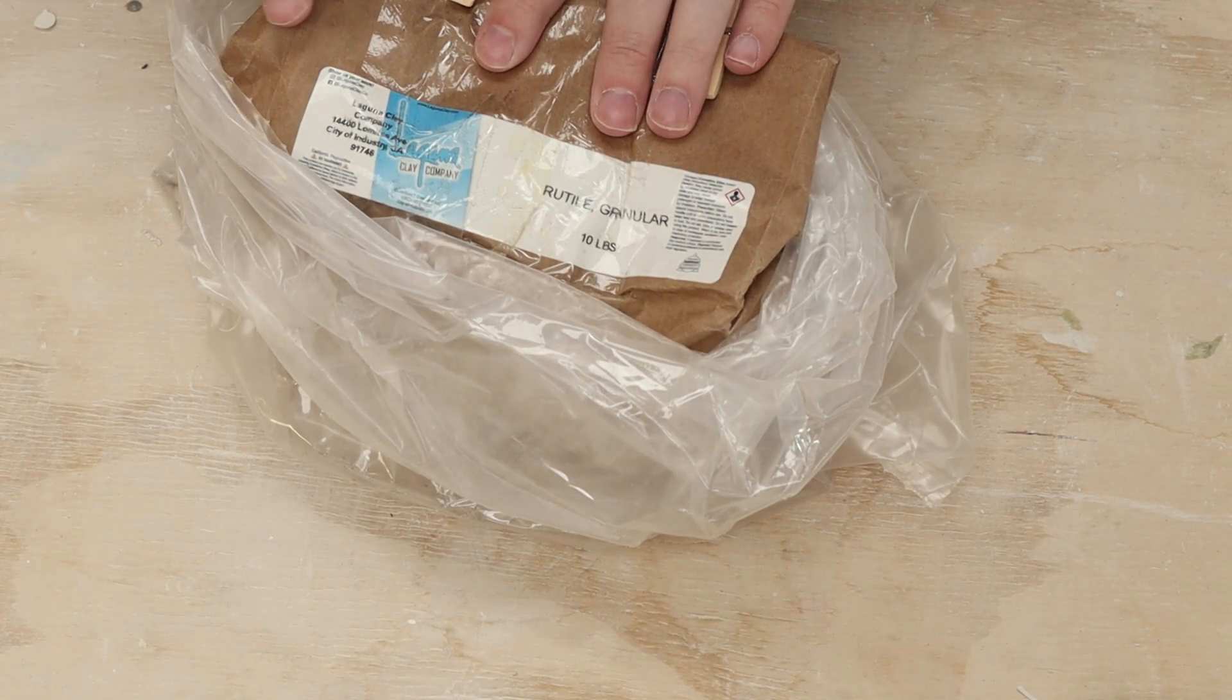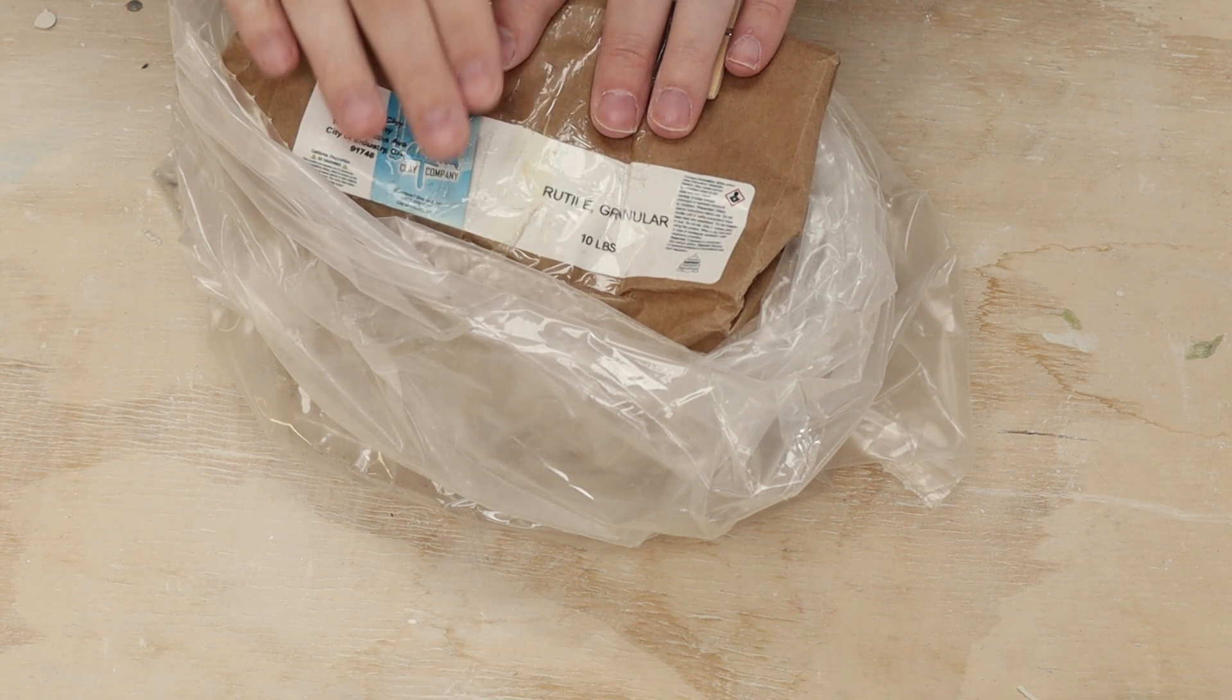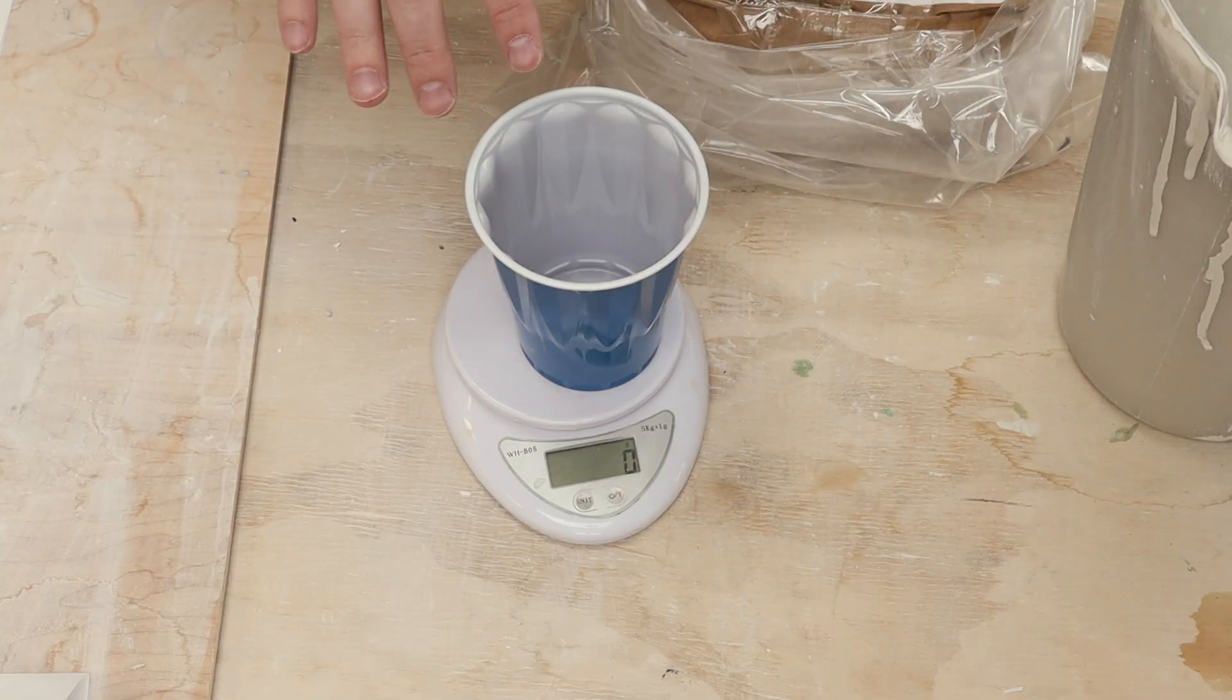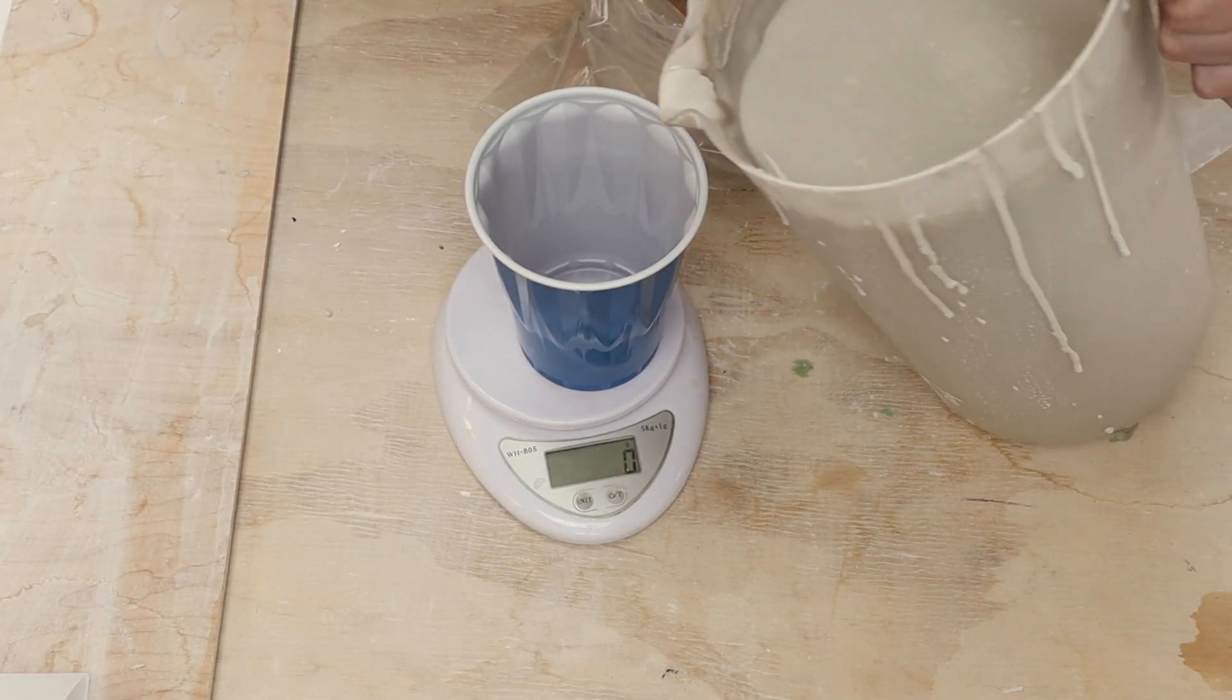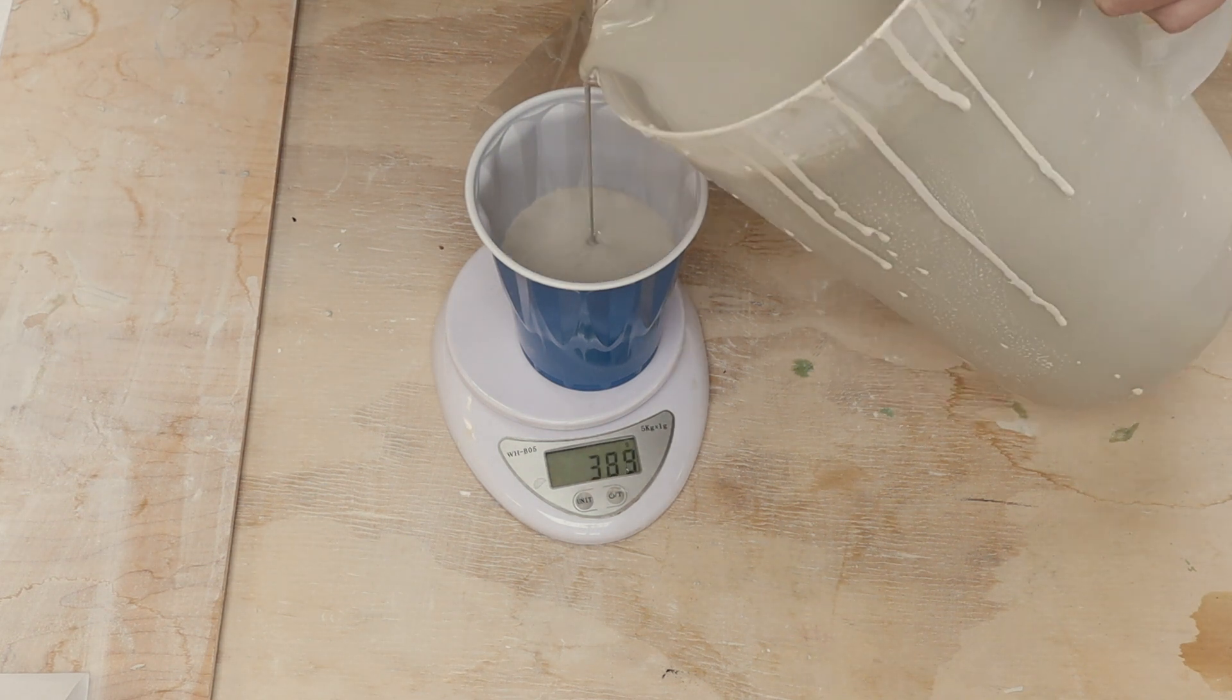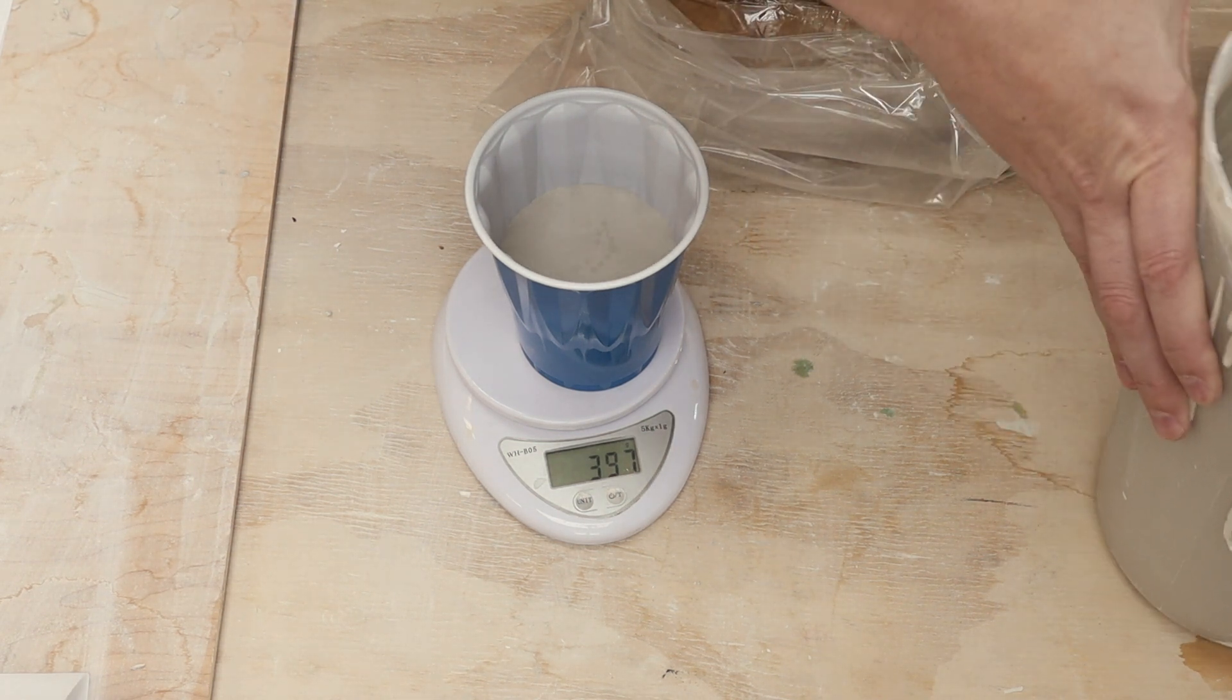Okay, I finished up all the ilmenite and now I'm going to move over to rutile and do the same thing for those. To do four test tiles, I need 400 grams of slip. I just mixed up my slip here. All right, 397, I think that's close enough.